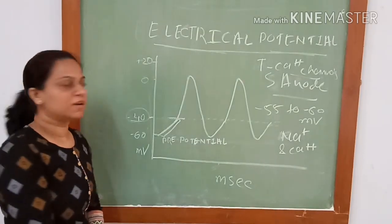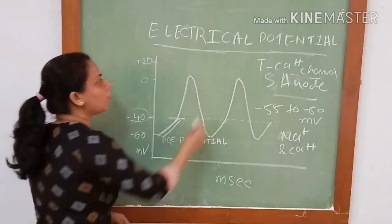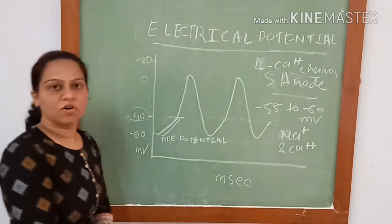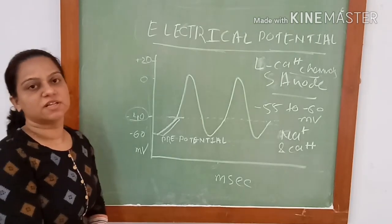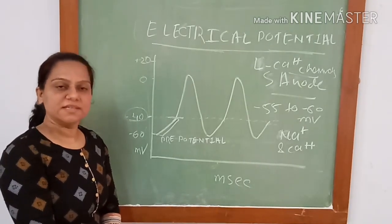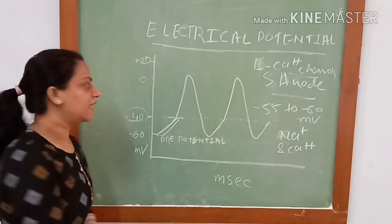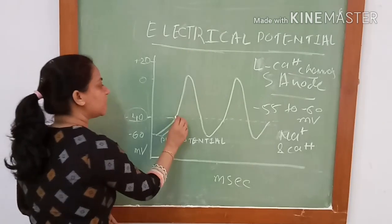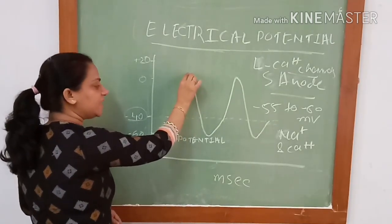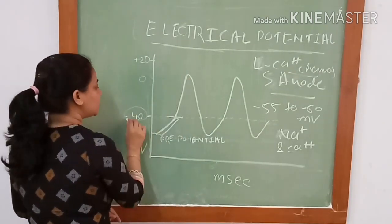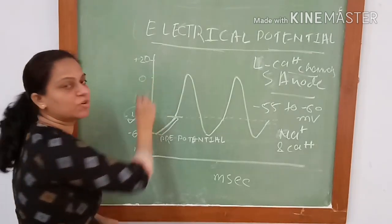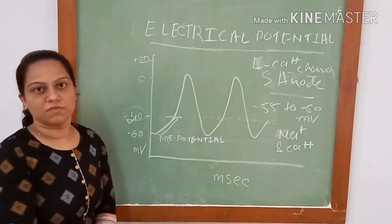From here, due to opening of L-type calcium channels, there will be entry of calcium ions inside the cell, forming the phase of depolarization. This brings the membrane potential from minus 40 mV to somewhere around plus 5 mV.